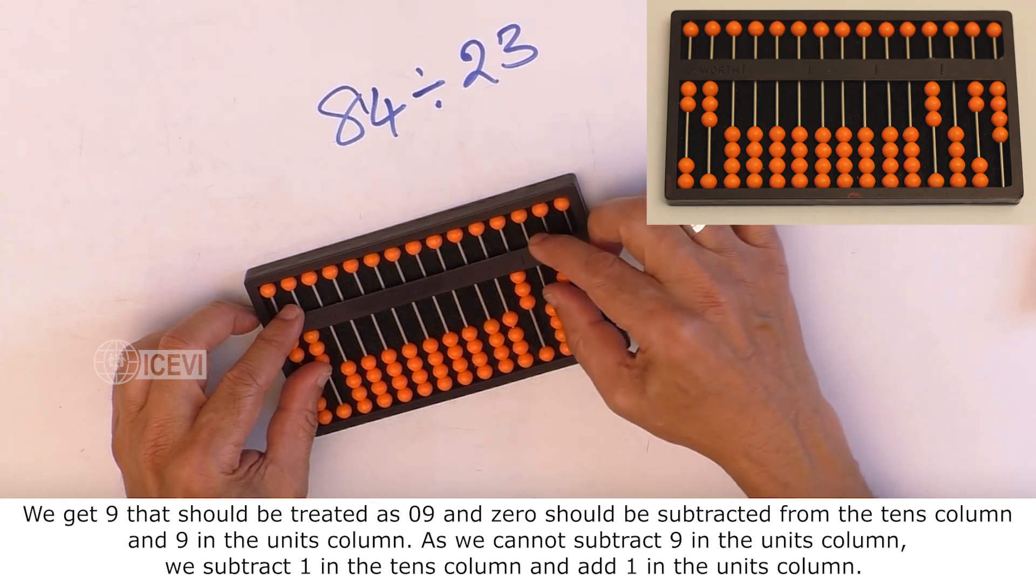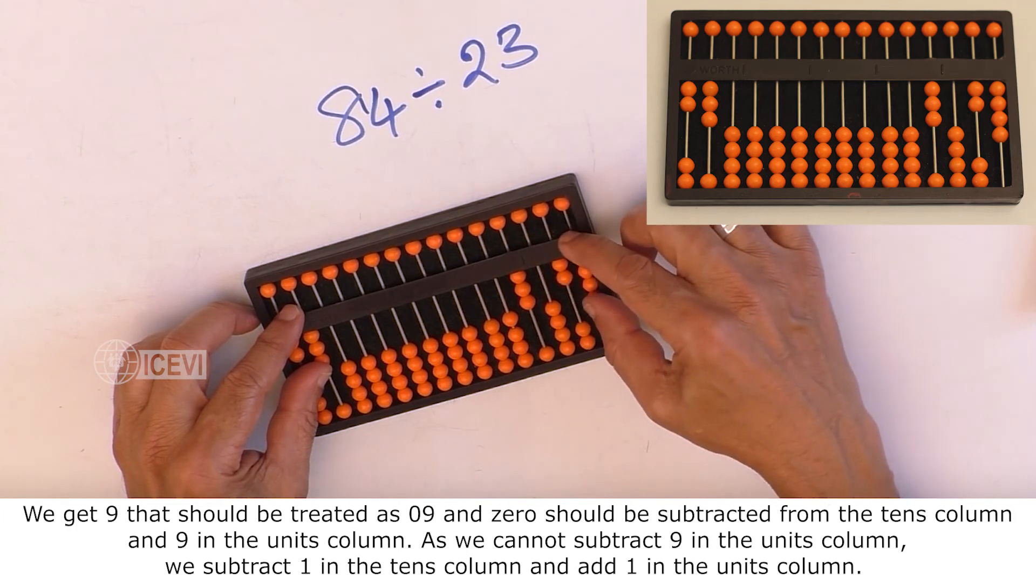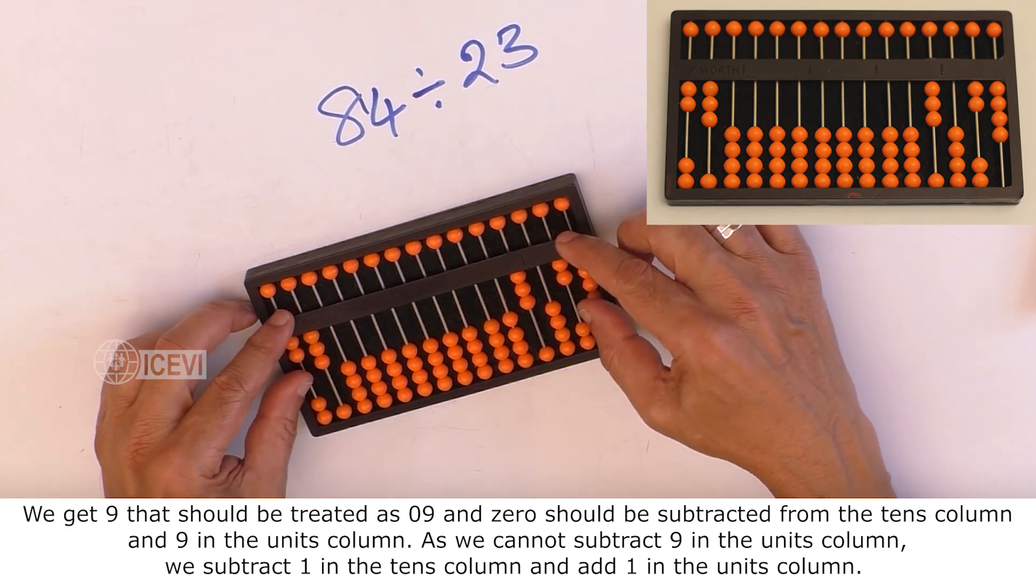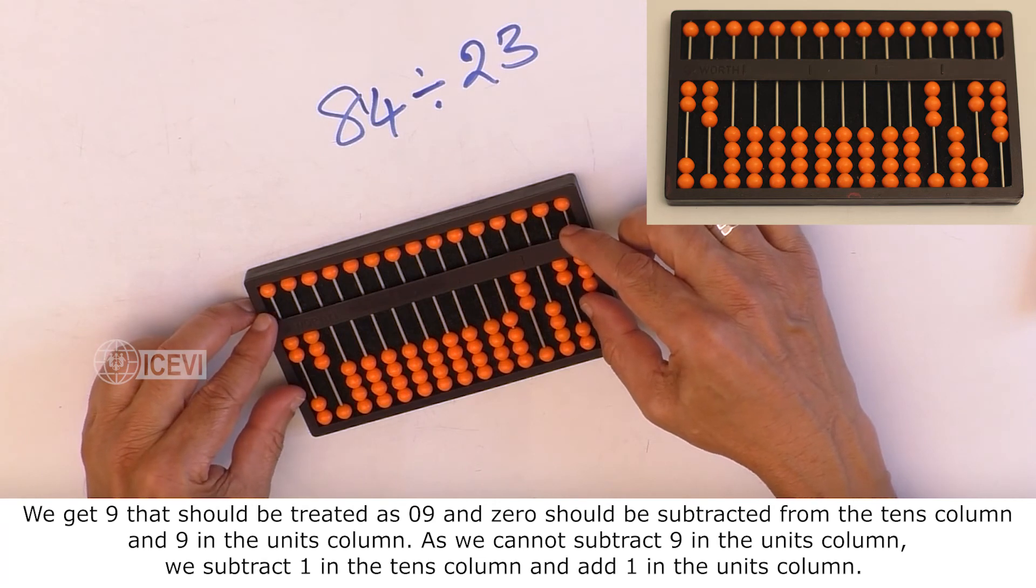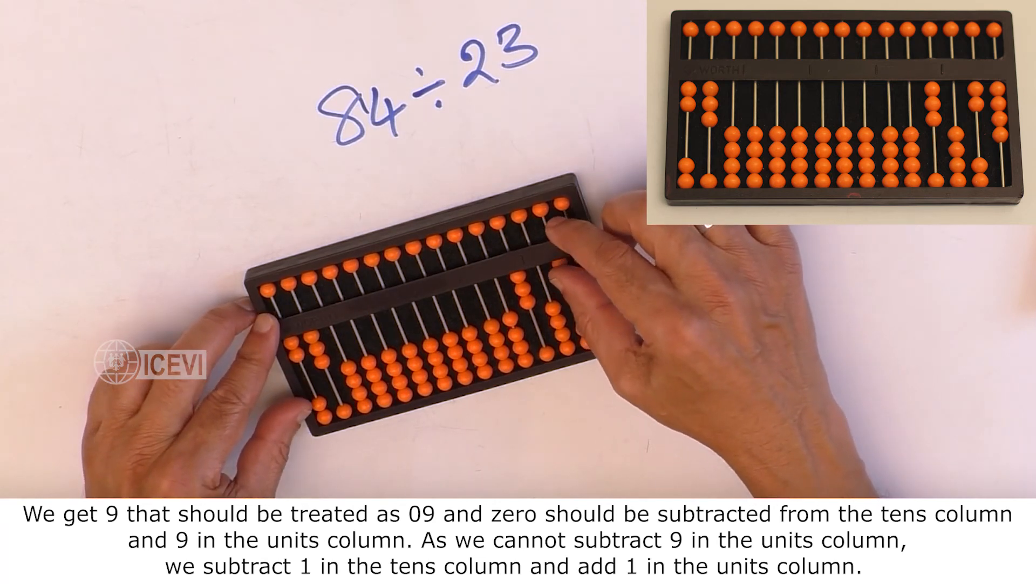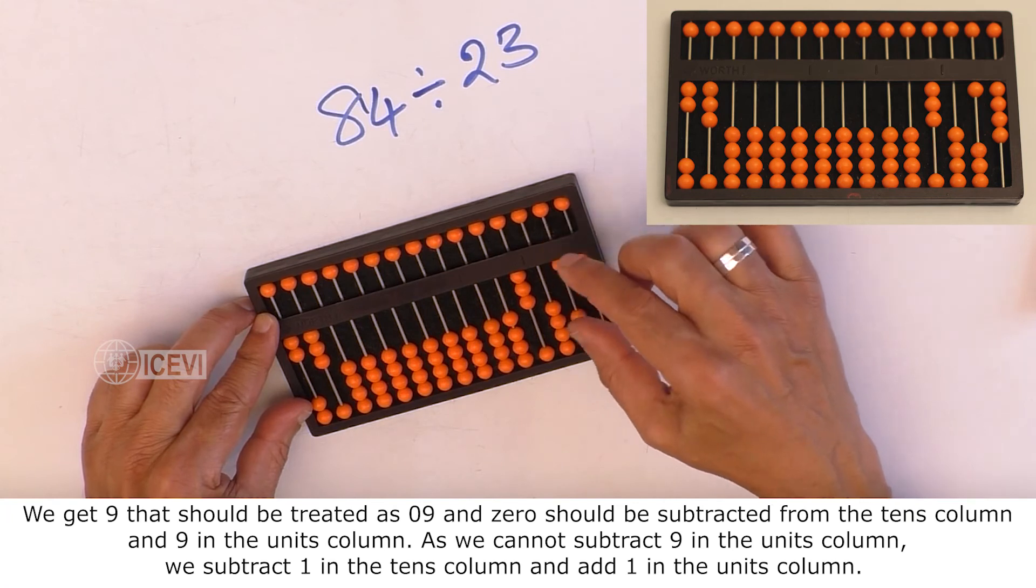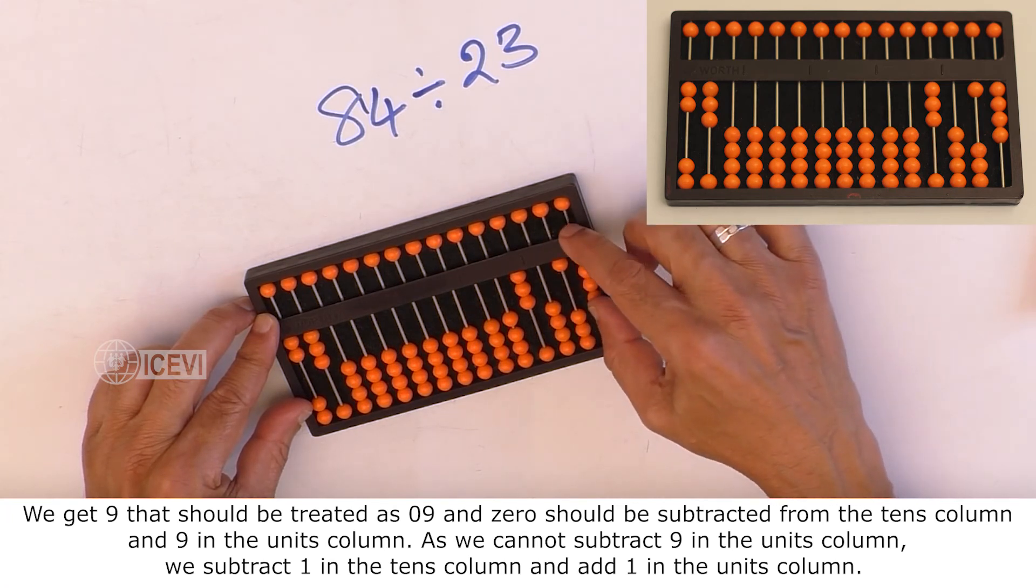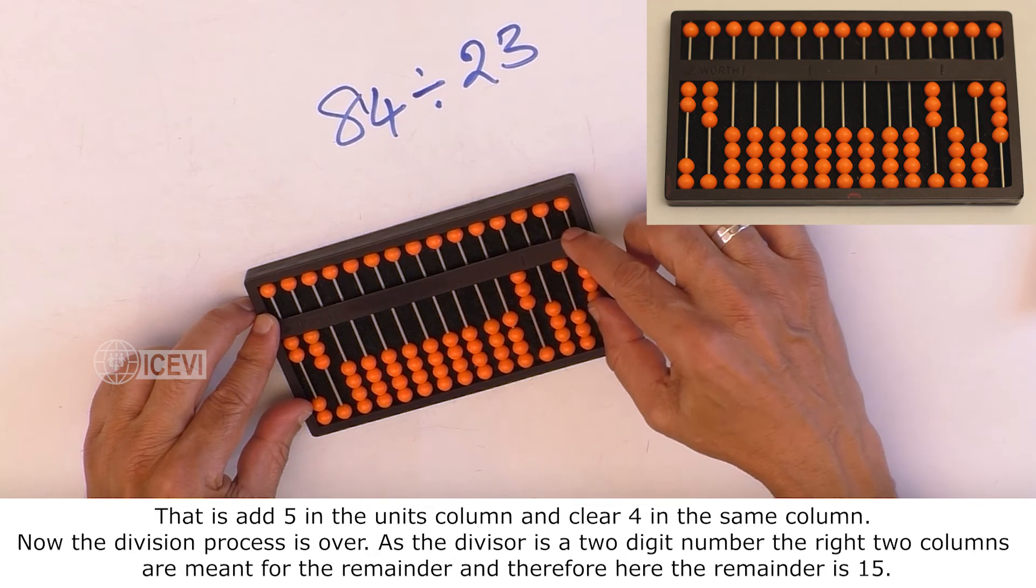As we cannot subtract 9 in the units column, we subtract 1 in the tens column and add 1 in the units column. That is, add 5 in the units column and clear 4 in the same column.